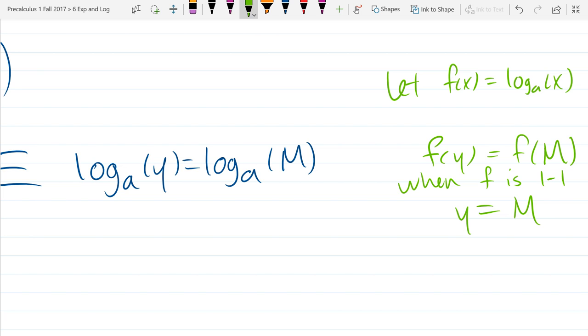So the base does have to match. If the base didn't match, then the functions would be different. So if I wrote this out in regular function notation, I'll let f equal log base a of x. I'll rewrite this statement right here. This is f of y equals f of m. What property of f do I need to conclude that y equals m? There's some property. I can't just say that the output matches, therefore the input matches. So it happens when f is one to one.